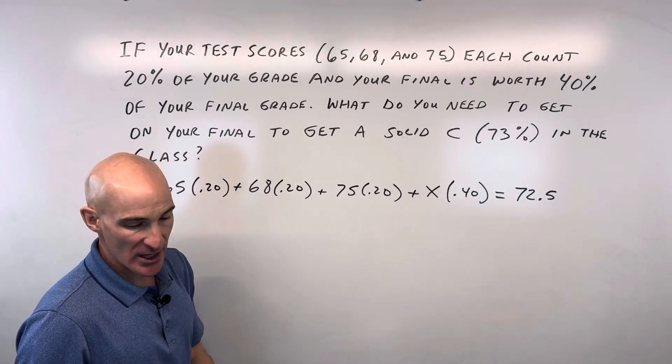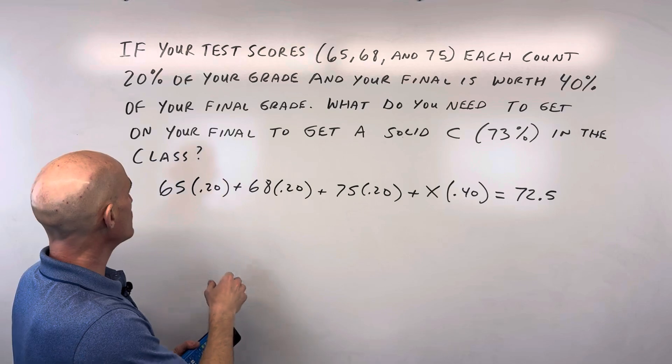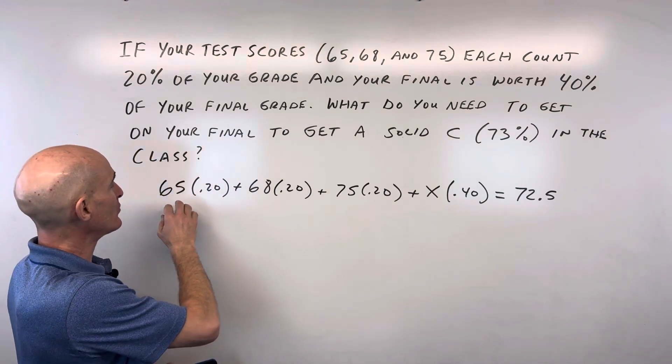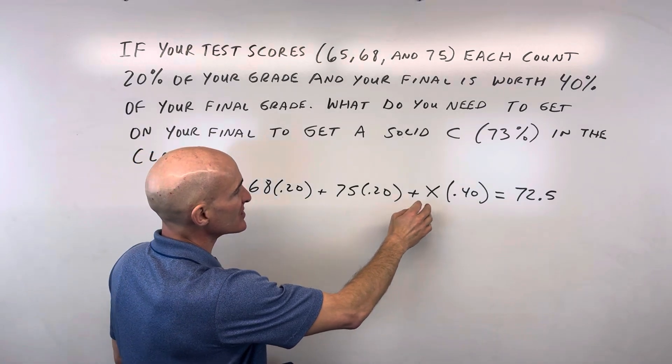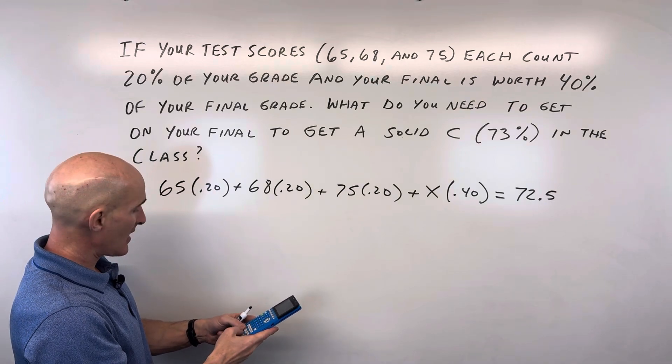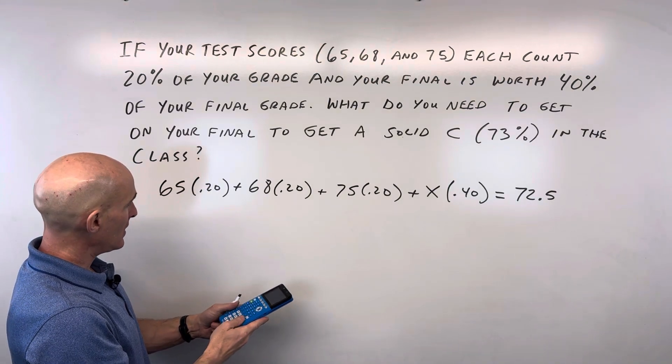So how do we solve this equation? I'm going to use the calculator here. Notice that I'm using 65 and that represents 65%. I'm just trying to keep it simple—these are the percentages, but I'm just using whole numbers. Let's go ahead and multiply these together. 65 times 0.2 is 13.